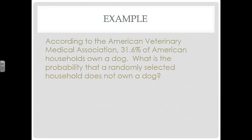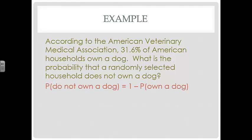Here's an example. According to the American Veterinary Medical Association, 31.6% of American households own a dog. What is the probability that a randomly selected household does not own a dog? We take 1 minus the probability that a household does own a dog — which is 0.316 — and get 0.684, or about 68.4%. So 68.4% of households do not own dogs.